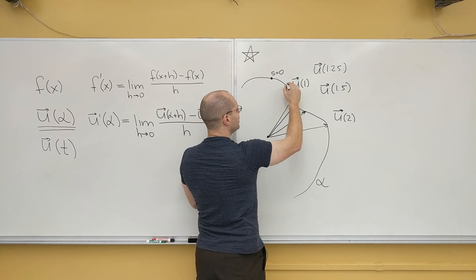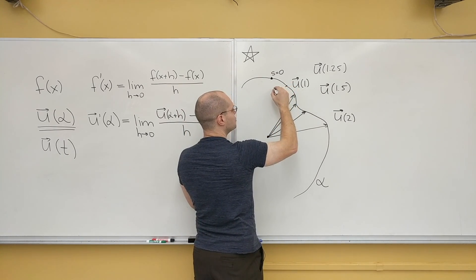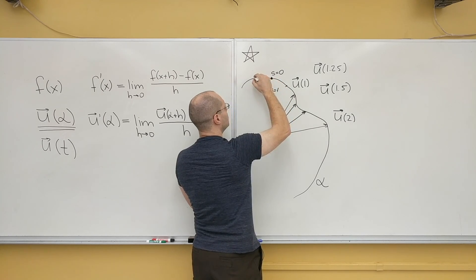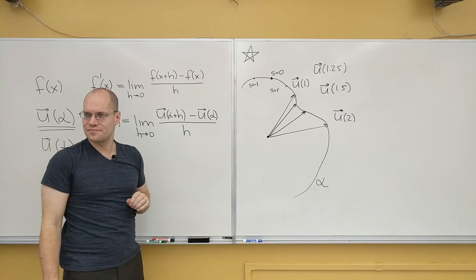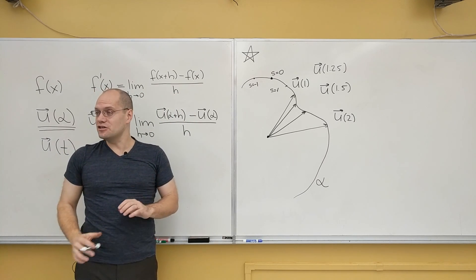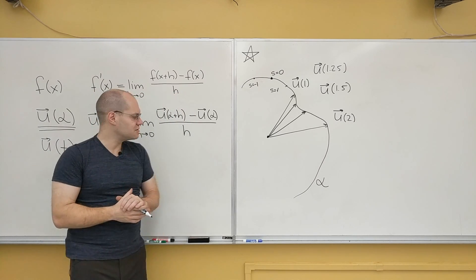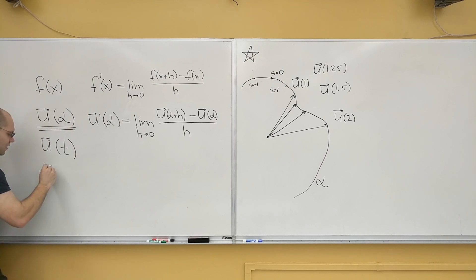So this would, right here, would be s equals one. And this right here would be s equals minus one. So it's signed arc length. That's a very interesting parameterization.